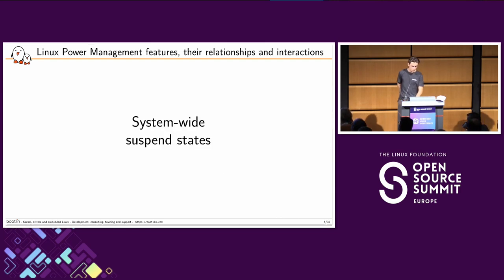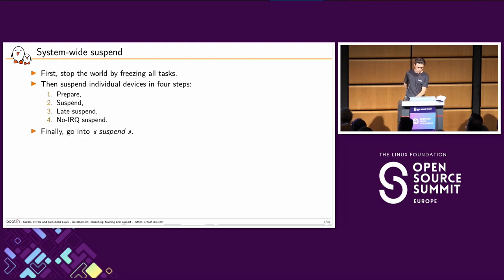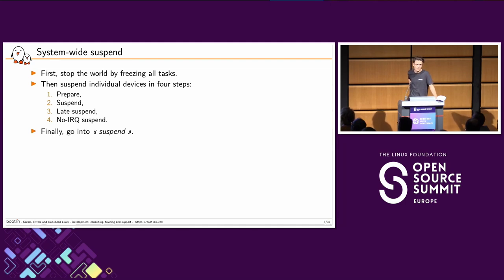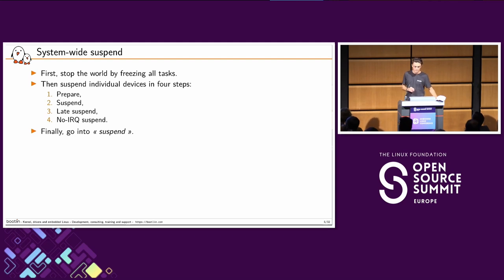We'll start with system-wide suspend. So what is it, how does it work? First step — and there are multiple suspend types, we'll see that later — you always freeze all tasks. We often think about user-space processes, but that's not it: we also stop all kernel tasks. Then we go through every Linux device and do four steps: we prepare them, we suspend them, we late suspend, and no-IRQ suspend. We'll see later what that means in detail. And then we go into what we call 'suspend' — that word is pretty generic and can mean many things depending on the platform.